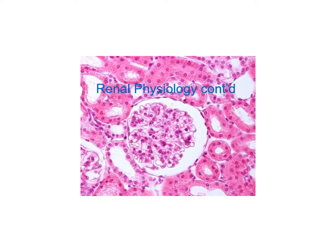This is the video for lecture 8b on renal physiology, continuing with our discussion. Here you see a photomicrograph of a glomerulus inside a glomerular capsule — there's the capsule and all these round structures.